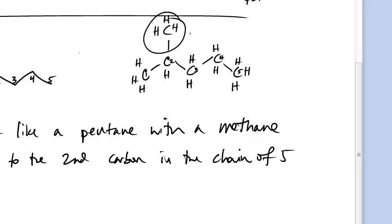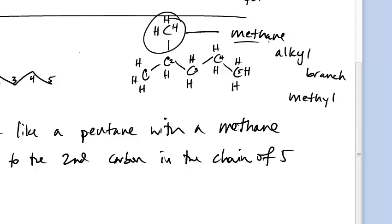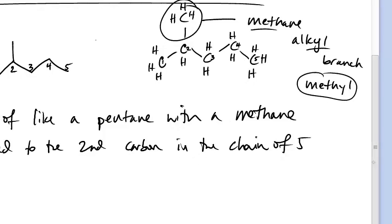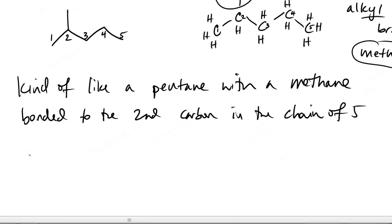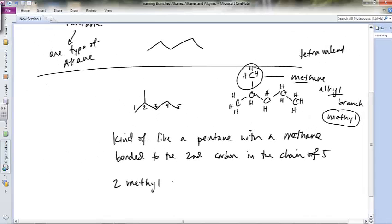This branch is a methane alkyl branch — instead of calling it a methane alkyl branch every time, we just call it a methyl group. We take 'meth' and add 'yl' from 'alkyl.' So it's a methyl group attached to the second carbon in this chain of five, which means the name of this compound is 2-methylpentane. We name it pentane because the longest chain is five carbons, and the '2' tells us which carbon the methyl group is attached to.